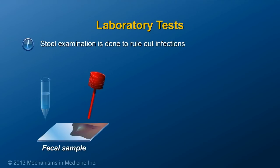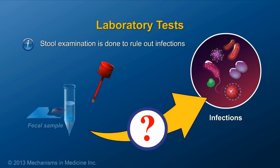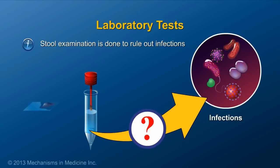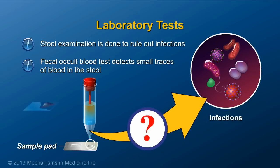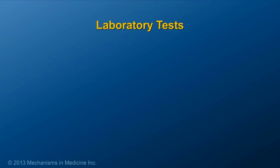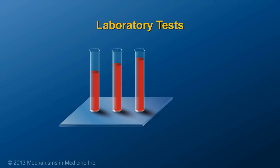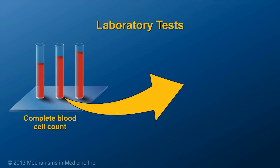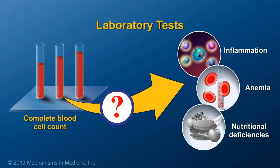A stool examination is done to rule out bacterial, viral, or parasitic infections. A fecal occult blood test detects small traces of blood in the stool that cannot be seen with the naked eye. Blood tests are important tools to aid in the diagnosis. A complete blood cell count is done to look for inflammation, anemia, or nutritional deficiencies.